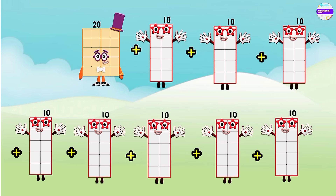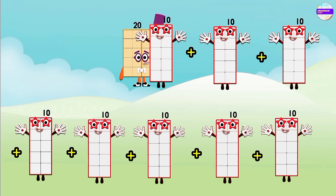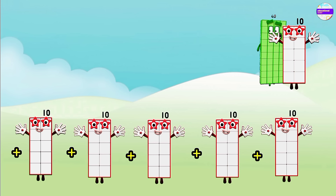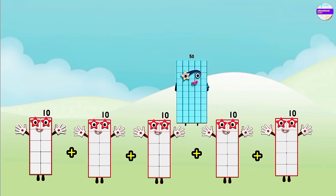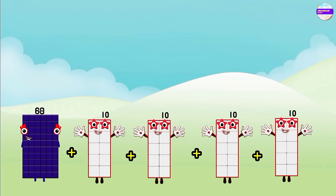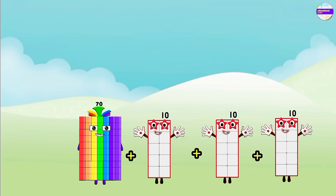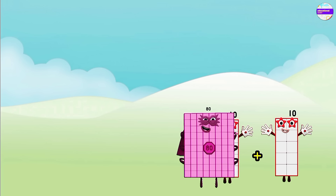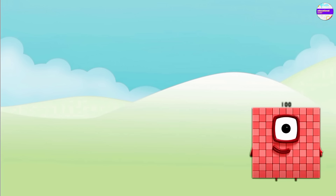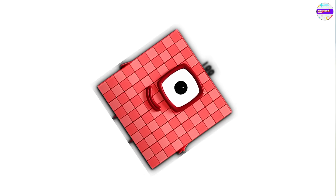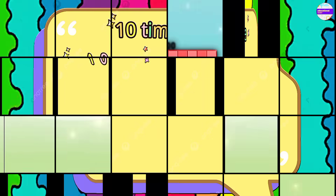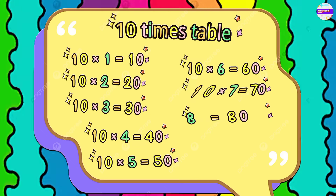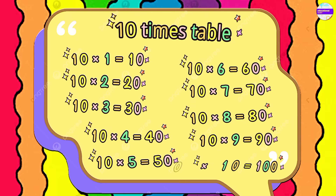10 plus 10 is 20, 20 plus 10 is 30, now 40, 50, 60, 70, 80, 90, and 100. And now our 10 times table is ready.